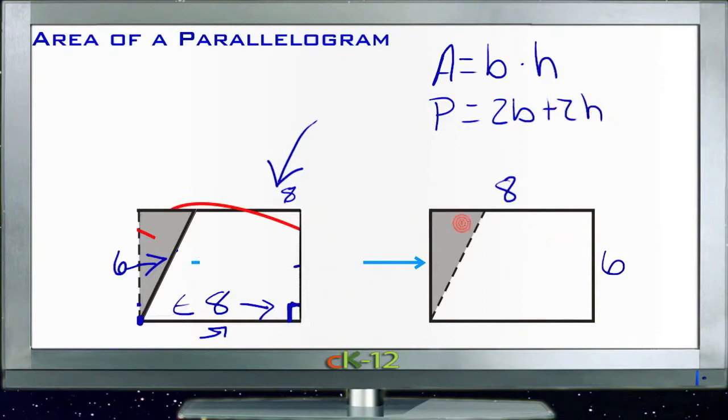The only trick to it is to recognize that this distance, this diagonal line down here that forms one of the sides of the parallelogram, that isn't the height. That's the slant height. That's sort of the, I mean, you can use that for the perimeter, but you can't use that to calculate the area, because that isn't exactly how tall it is.